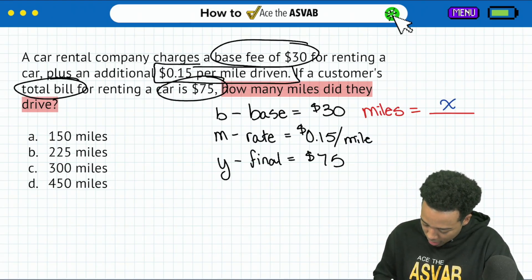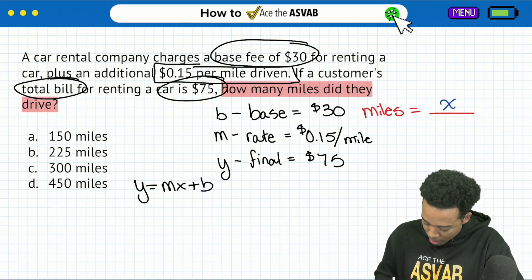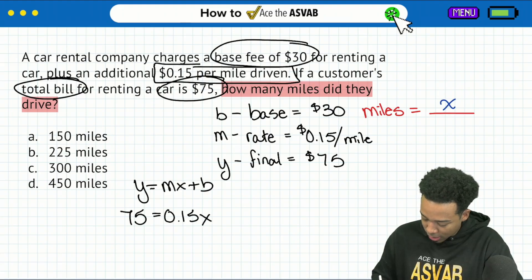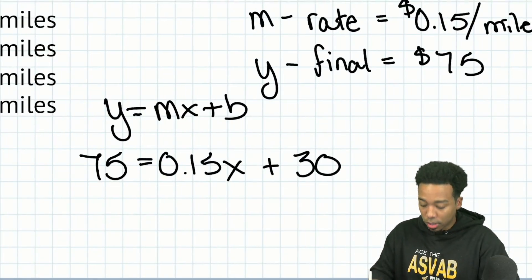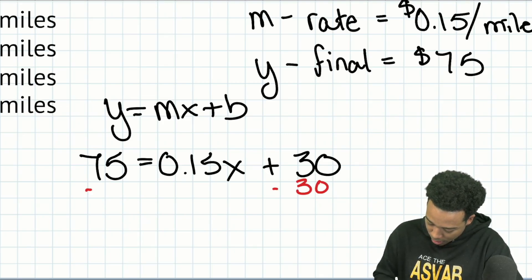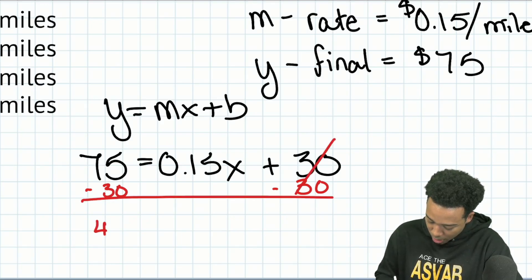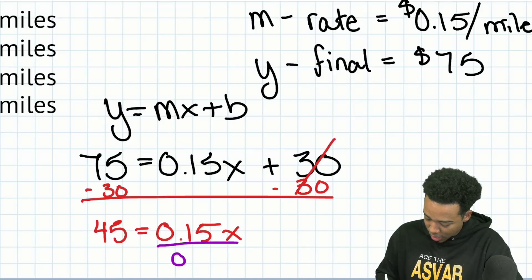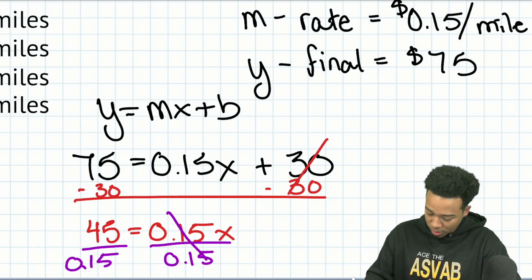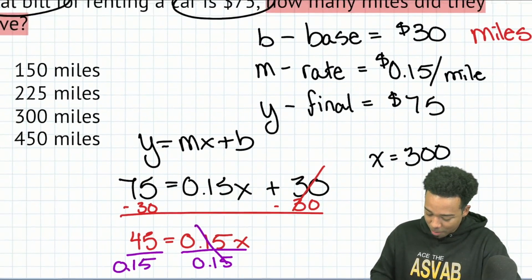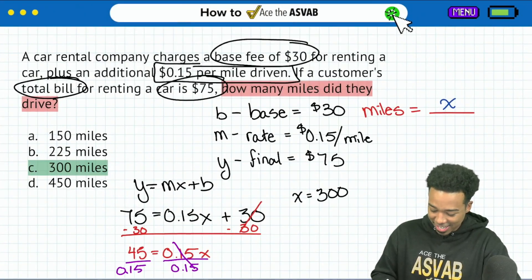We know exactly what we're looking for. Set up the equation and solve. Y equals MX plus B. The Y is $75, the final value. The slope is $0.15 per mile, the number of miles is X, and then we're adding that base fee of $30. Now solve: subtract the 30 on both sides — cancels out, giving me 45 — and that's going to be equal to 0.15X. Then lastly, divide both sides by 0.15, and we can say that's going to be 300. The answer is C and we're done.